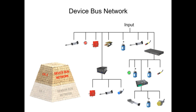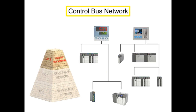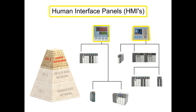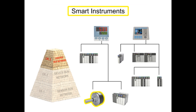Moving up the pyramid, the next increasingly complex level of fieldbus networking is the controlbus network. Controlbus networks are the most advanced networks used on the factory floor and data communication happens at a high level. PLCs or Programmable Logic Controllers are connected to each other alongside HMIs or Human Interface Panels to allow for complete configuration and control of every instrument on the network. Smart instruments capable of performing complex operations can also be connected at this network level.